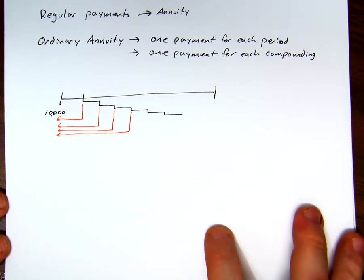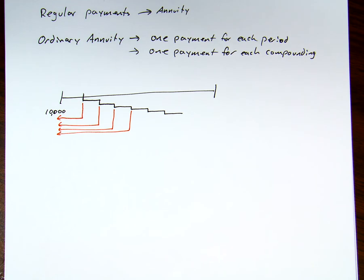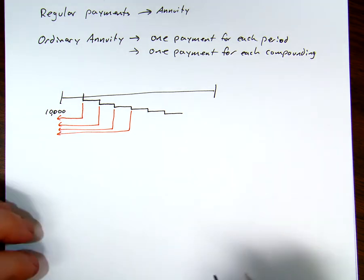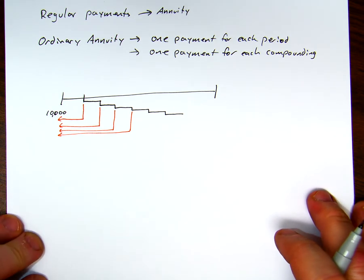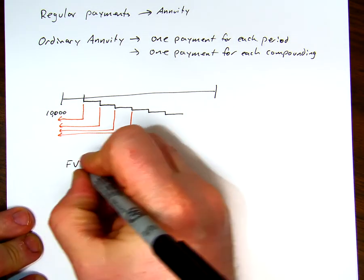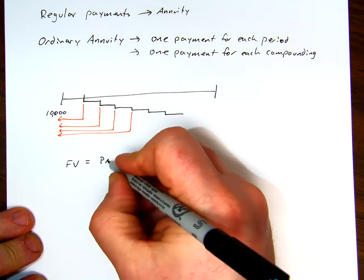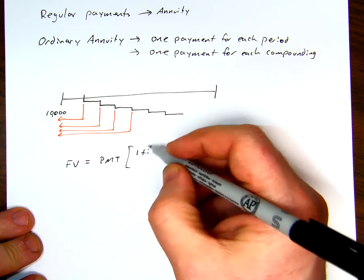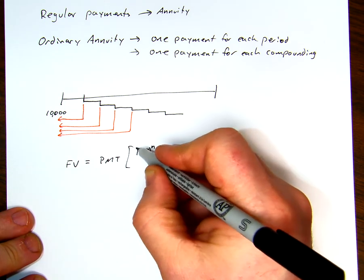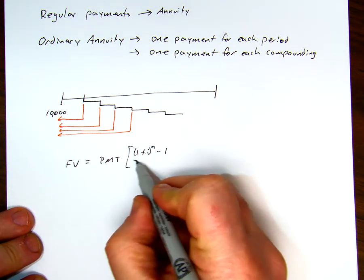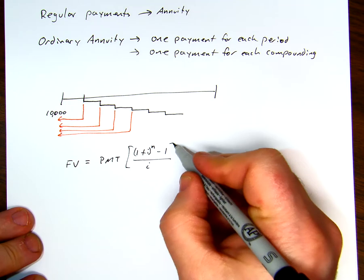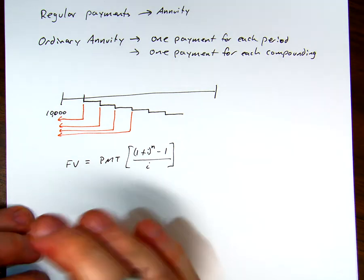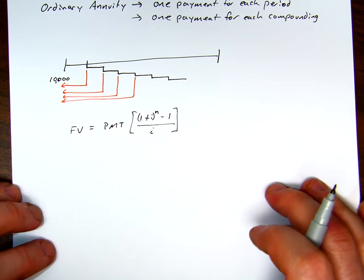But since we do this so often with payments, loans, and everything else, we're going to say the future value of a whole set of payments is equal to the size of each payment times (1 + i)^n − 1 over i, because we're doing a whole bunch of different payments. We're not going to use the formula very much, but we will use the calculator.